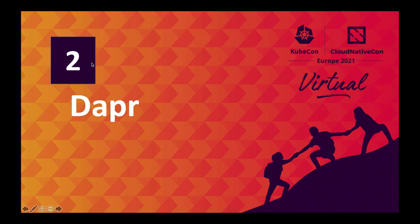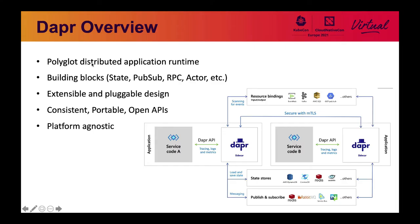Next, let's talk about Dapr. Dapr is a polyglot distributed application runtime, meaning it can work for multiple languages. It provides basic building blocks such as state management, pub/sub, RPC routing, and actor programming models. It's a flexible and pluggable design as a community-driven open source project, providing consistent, portable, and open APIs. It's platform agnostic, which means it can run on cloud or edge across different clouds.